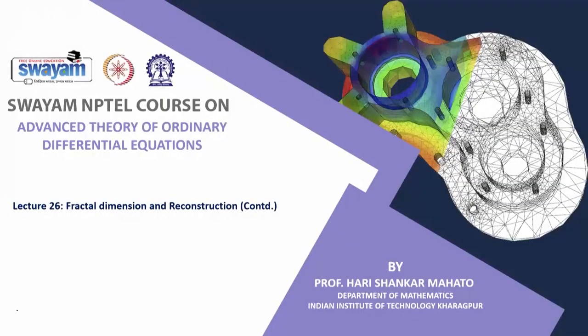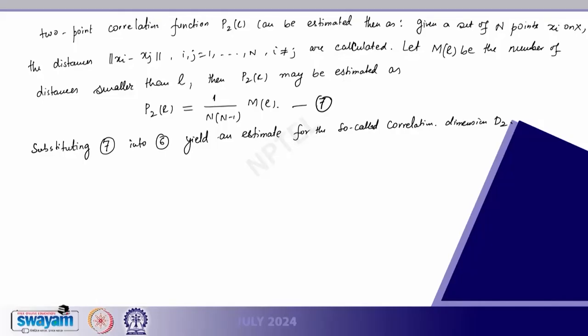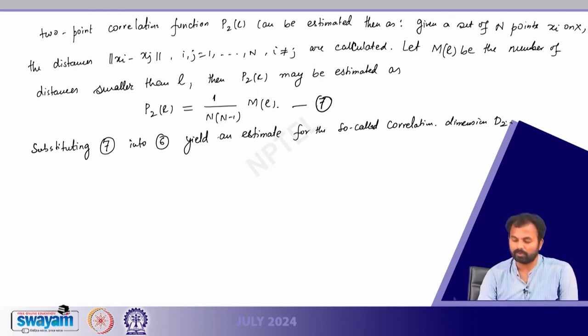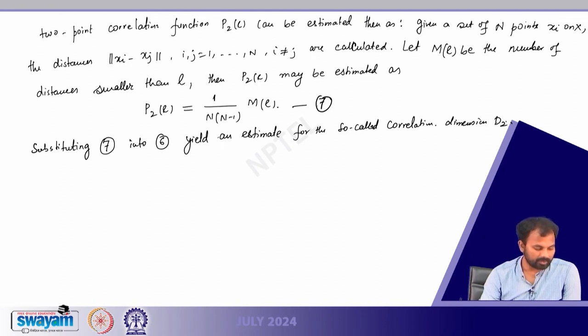Hello students! In the previous class I started with the definition of fractal dimension, and today we are going to conclude this definition and then we will move on to reconstruction, the last topic of this chapter. If you go back to the previous class, we introduced the definition of correlation dimension D2 up to here and then we will continue.